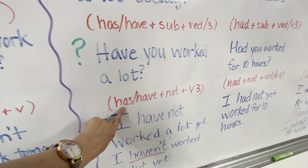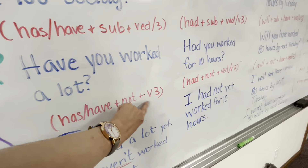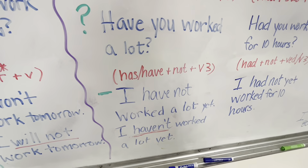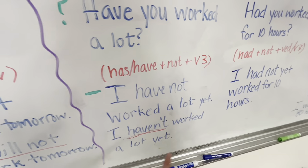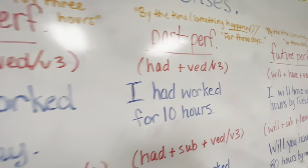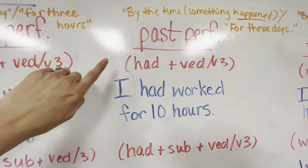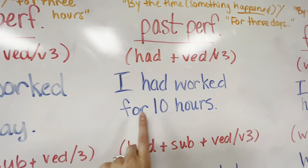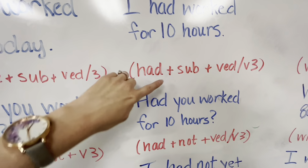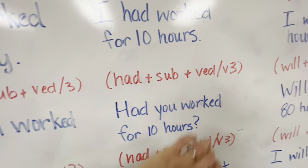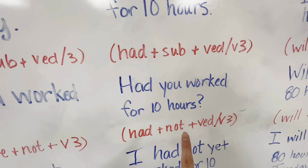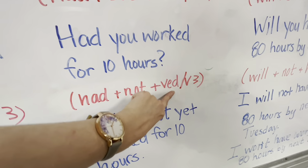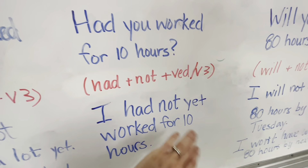To make present perfect negative: has or have plus not, then the past participle — I have not worked a lot yet, or I haven't worked a lot yet. Past perfect: had and our verb form — I had worked for 10 hours. To make it a question: had, your subject, and that verb form — had you worked for 10 hours? To make it negative: had not and the verb form — I had not yet worked for 10 hours.